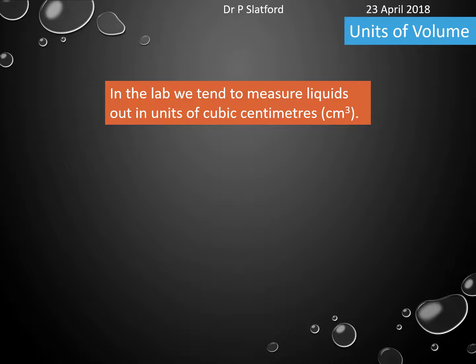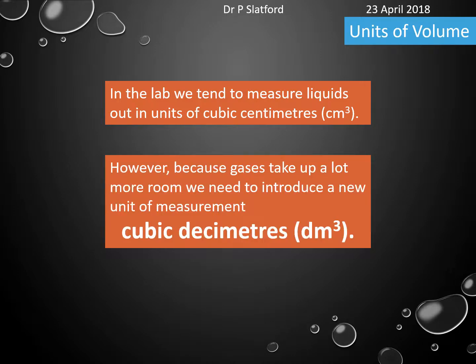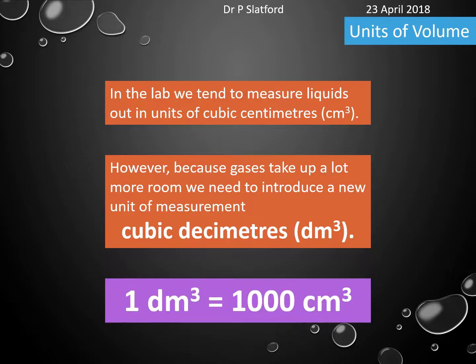In the lab we tend to use cubic centimeters as a way to measure particularly liquids. However, because gases take up a lot more room we end up using quite a big number of cubic centimeters. So actually what we use is something called cubic decimeters, and one cubic decimeter is equal to a thousand cubic centimeters. We need to make sure we remember this conversion.